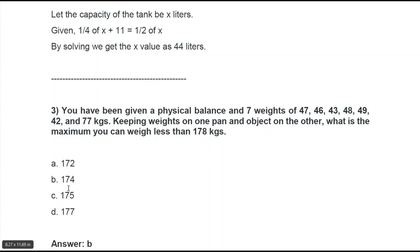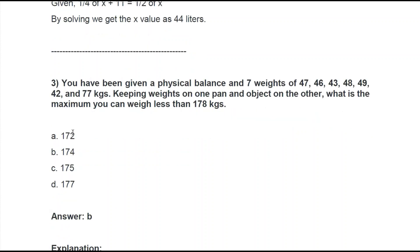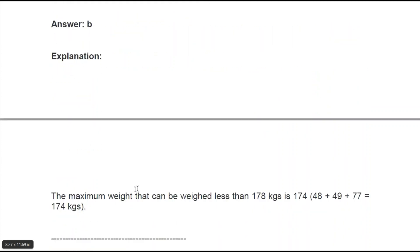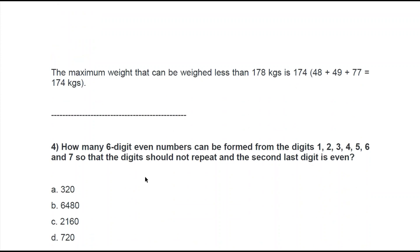It's 174, I guess. Let's see the answer. Yes, 174 is the answer. The explanation shows: the maximum weight that can be weighed less than 178 kgs is 174, found by 48 + 49 + 77 = 174 kgs. Bingo!